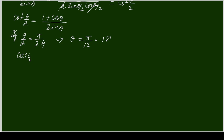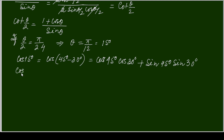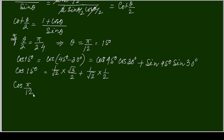cos(15°) can be written as cos(45° - 30°). Expanding: cos45·cos30 + sin45·sin30. That gives (1/√2)(√3/2) + (1/√2)(1/2), which simplifies to cos(π/12) = (√3 + 1)/(2√2).